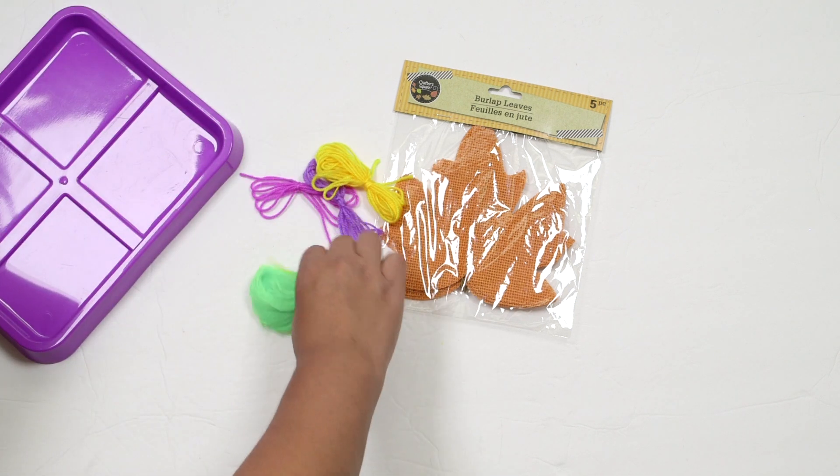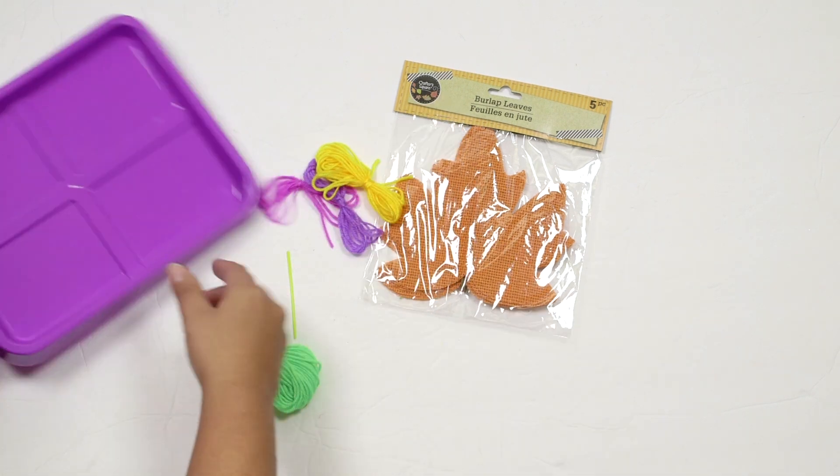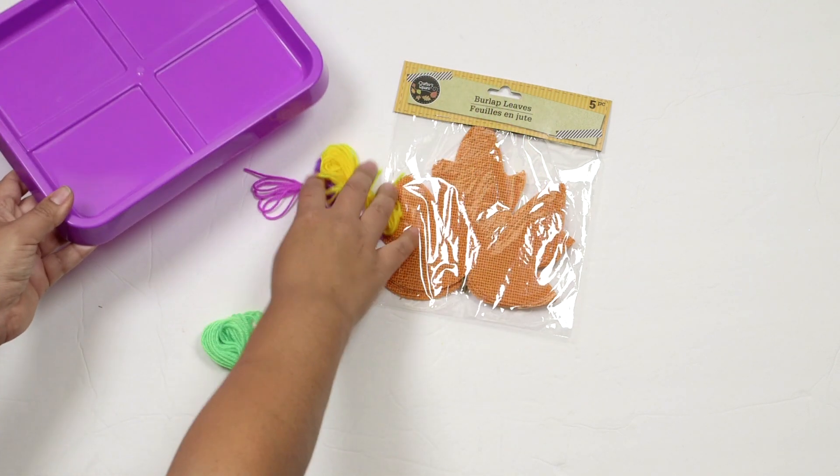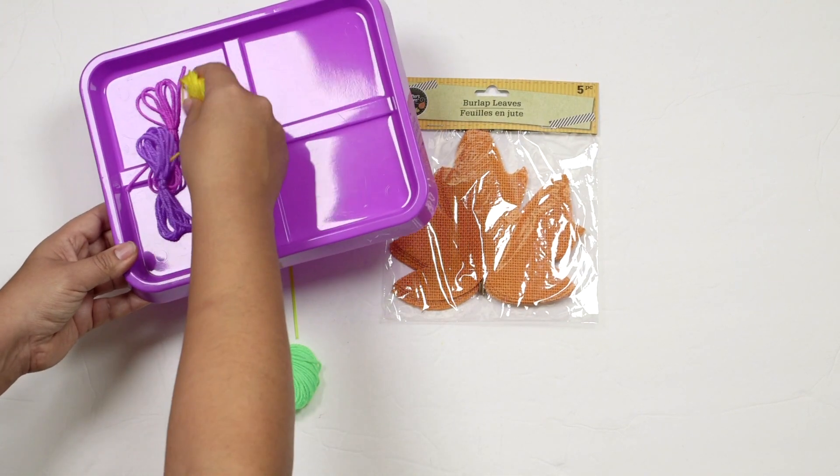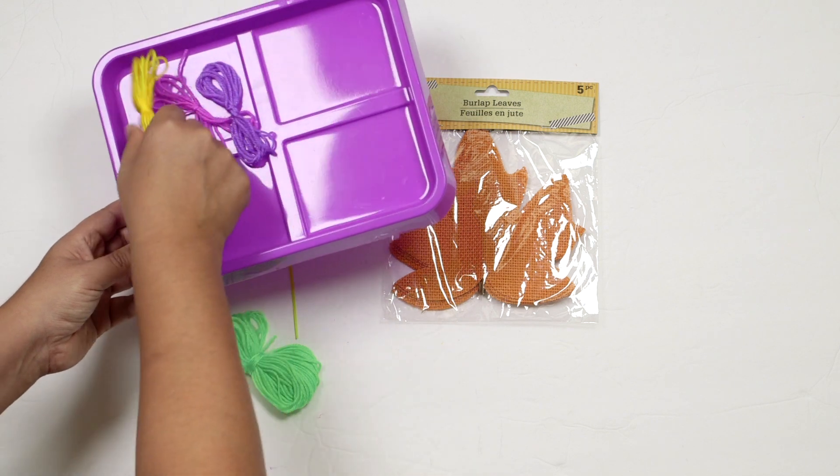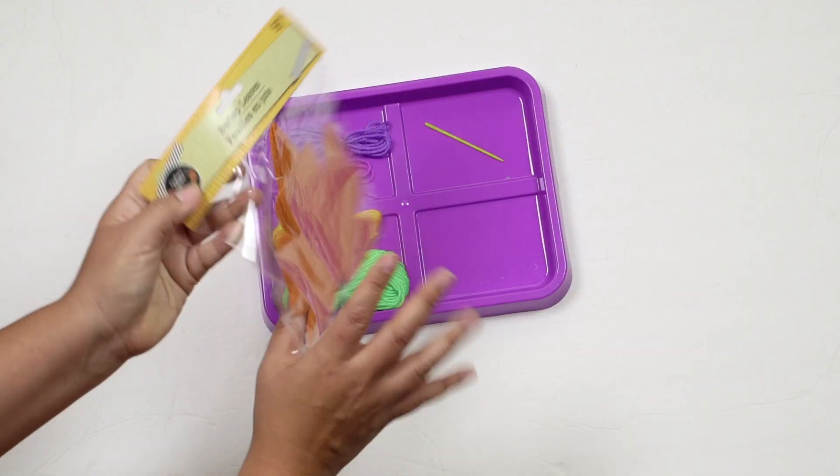So I'm going to pull this out and plus it comes with the yarn. You can buy yarn individually too at Dollar Tree. And then there's our little needle. And then I have a tray also from the Dollar Tree. You don't have to use this, but you can just to kind of set the materials on to present. And then our burlap leaves.